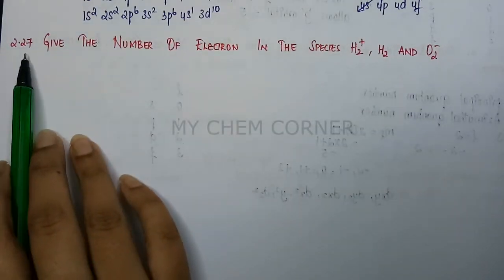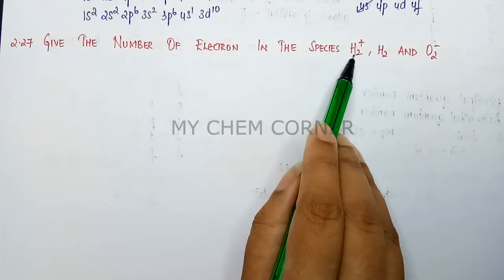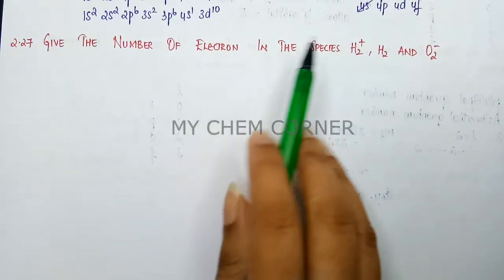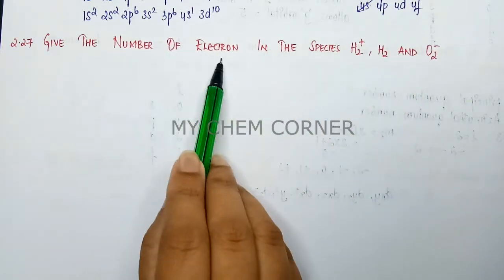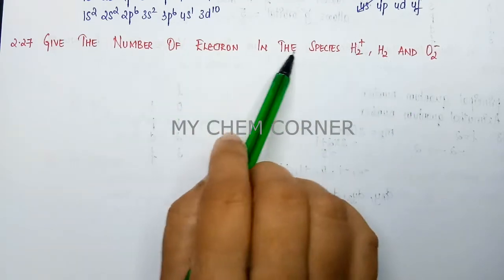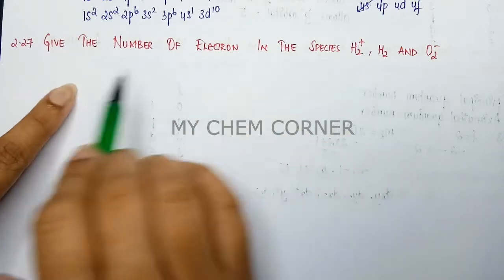The next question is 2.27: give the number of electrons in the species H2+, H2, and O2-. It clearly says number of electrons, which means we will look at the atomic number, because atomic number is nothing but number of electrons.